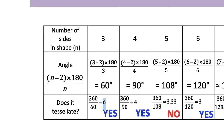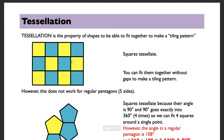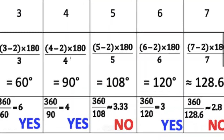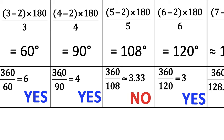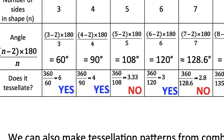Squares tessellate because 360 ÷ 90 = 4 exactly, fitting four squares around a point. Pentagons do not: 360 ÷ 108 = 3 and a bit, leaving a gap, so no. So regular pentagons don't tessellate.